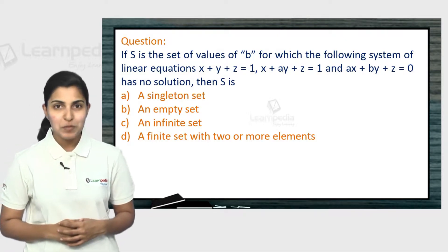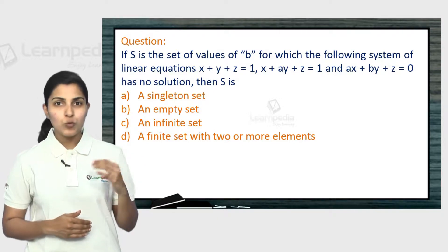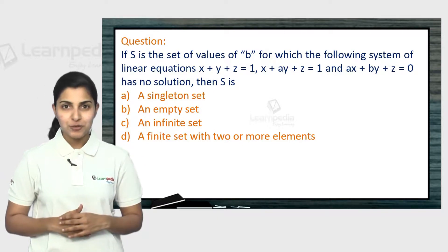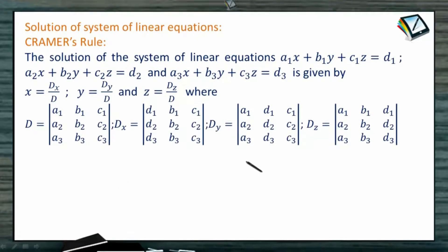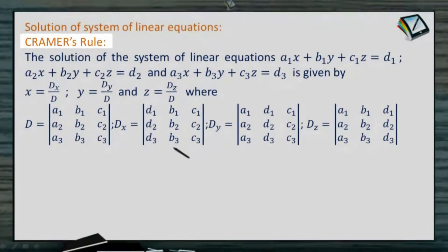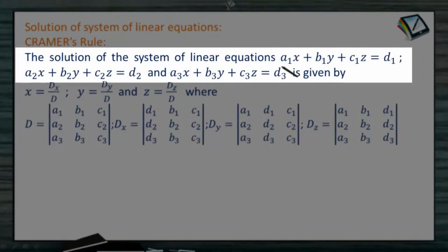To understand the concept behind this question, go ahead and watch the full video. Now let's learn about a very interesting method of finding the solution of a system of linear equations — that's a method called Cramer's Rule. When we have a system of three equations: a1x + b1y + c1z = d1, a2x + b2y + c2z = d2, and a3x + b3y + c3z = d3.